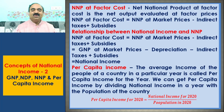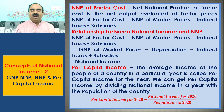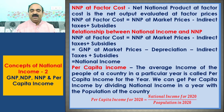In other words, NNP at factor cost in any country is called national income. Per capita income is the average income of the people of a country in a particular year. We can get per capita income by dividing national income in a year by the population of the country. For example, per capita income for 2020 is equal to national income for 2020 divided by population in 2020.